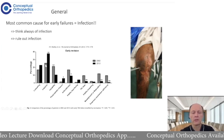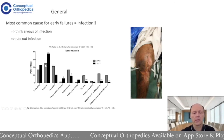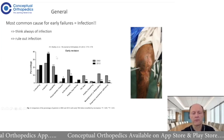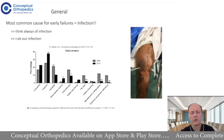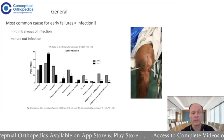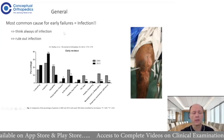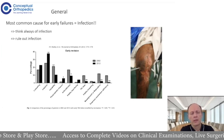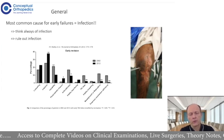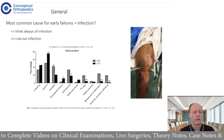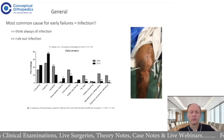Infection was already a quite high bar in the 2002 analysis. Ten years later, it is definitely the bar with the highest percentage in early revision — up to 40%. This leads to the general recommendation that we always have to think of infection and rule it out. Every joint coming to your office not working well — infection should be ruled out.